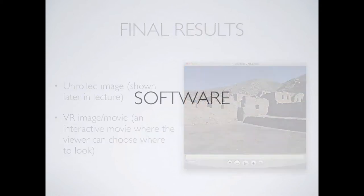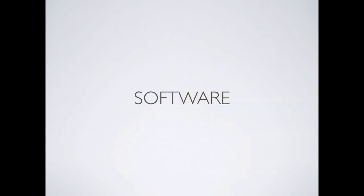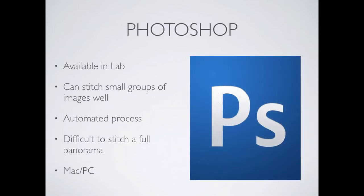Let's talk about software. Photoshop — no surprise, this is a class about Photoshop. It's available in the lab and works great for small groups of images. If you throw 40 or 45 images at it that are a full 360, it can get confused. I'm going to give you a full 360 panorama to work with. If you want to try throwing all the images at it and see what happens, that's okay — we just upgraded to Creative Cloud and maybe it'll handle it better than CS6 did.